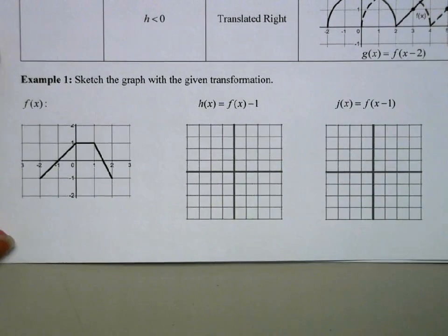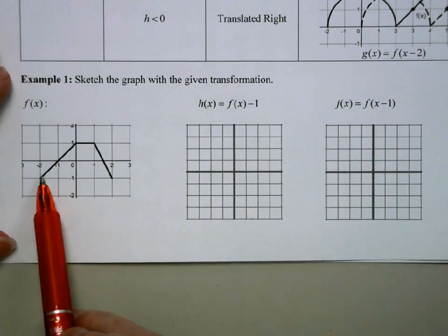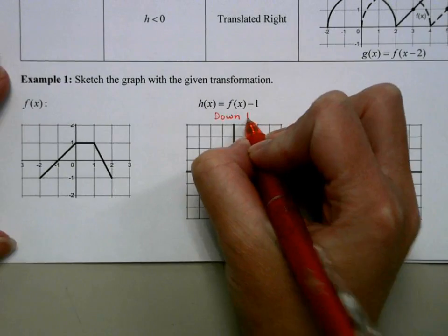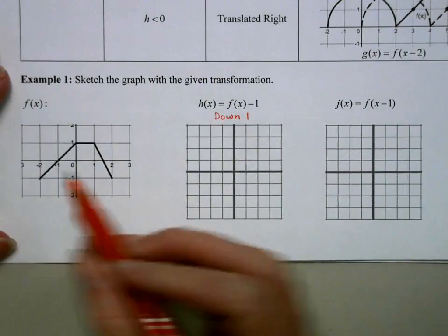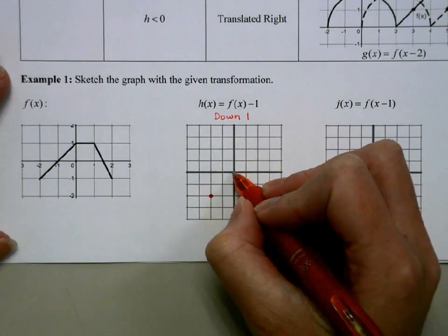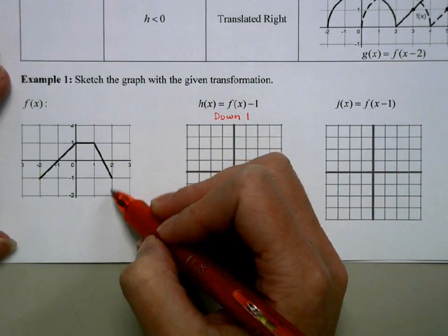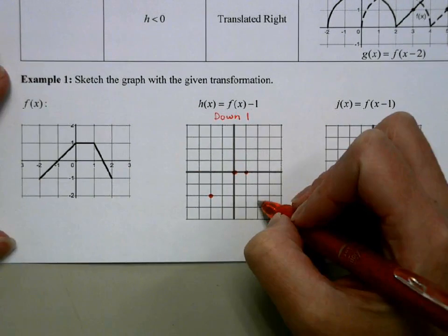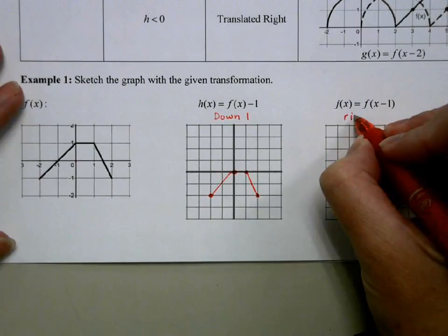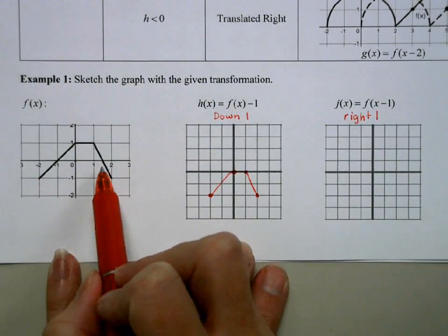I'm going to take this piecewise function and perform two different operations and graph the result. For the first one, we're going to take the graph of f and move it down 1. The point at negative 2, negative 1 moves to negative 2, negative 2. The point at 0, 1 moves down to 0, 0. The other points also get moved down. For the second one, this is going to move our graph to the right one, so all of these values get shifted to the right.